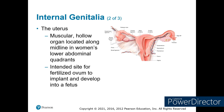The primary organ used during the growth of the fetus is the muscular uterus. It's a hollow organ located midline in the woman's lower abdominal quadrants. Typically it's about the size of a fist under normal circumstances. Once the fertilized ovum is implanted and starts to develop into a fetus, the uterus can expand to a very large size to accommodate the growing fetus.